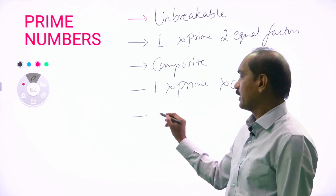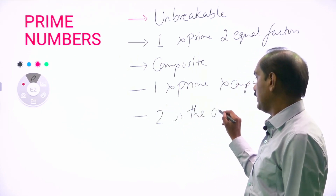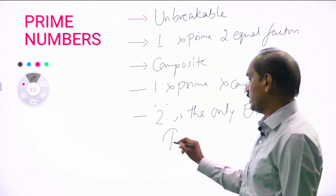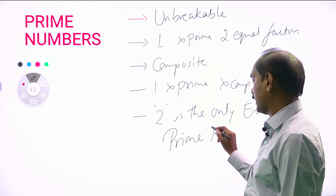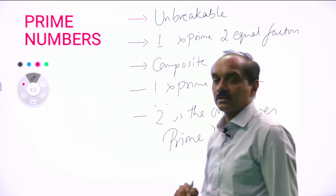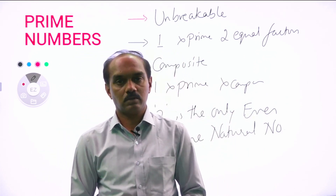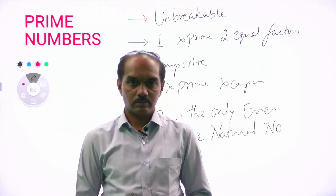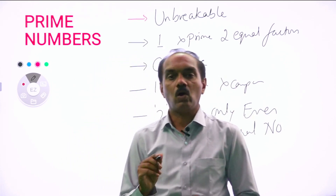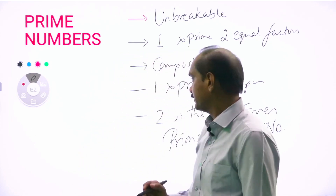Two is the only even prime natural number. The rest of them are all odd. You take randomly any prime number, it is an odd number — except two. All prime numbers are odd, but two.